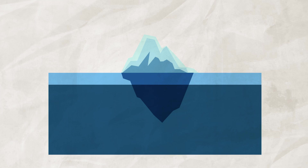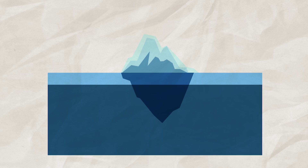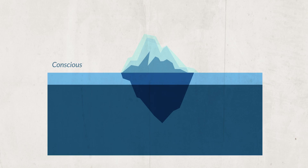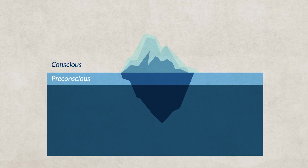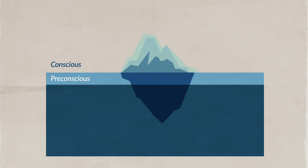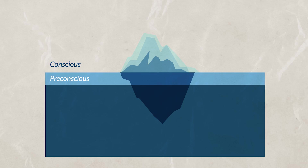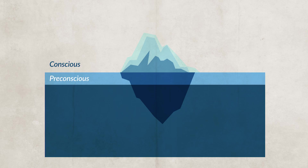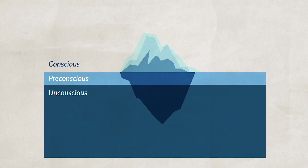Today, people often use an iceberg to describe Freud's ideas. On the top, above the water, is our conscious awareness. Just under the water is our pre-conscious, where information is stored for only a limited amount of time. This information can be recalled and brought back to our conscious awareness when needed. Below the pre-conscious area is our unconscious mind, where repressed memories are located.